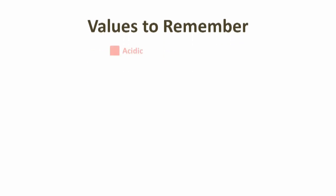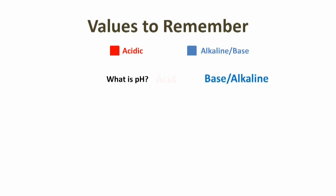To make it easy, I have colored the acid as red and base as blue. Now, what is pH? pH is the measure of acid and base in blood. Base is also called alkaline.